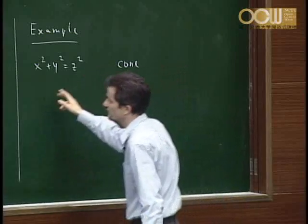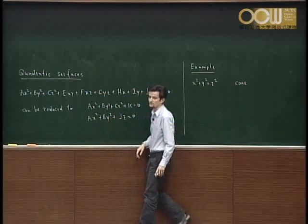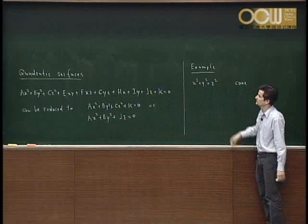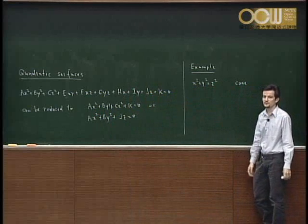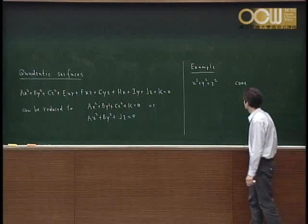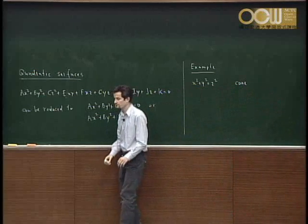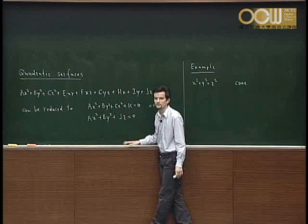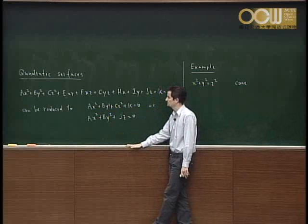Of course, you might have different values for a, b, and c, but you essentially get the same quadratic surface — the same type. We are just interested in the classification. From now on, we can assume that all the coefficients are not equal to zero.